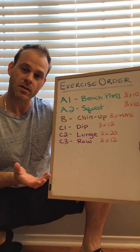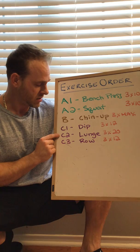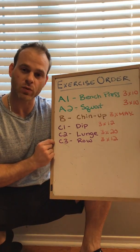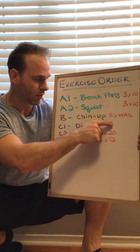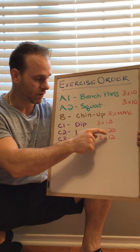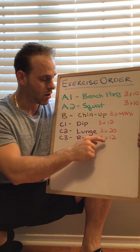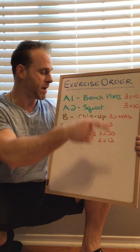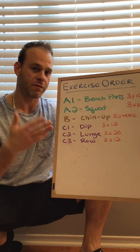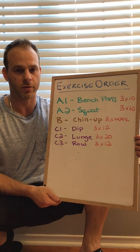The next series in this instance is the C series. The C series has three exercises: C1, which is the dip; C2, which is the lunge; and C3, which is the row. The way this will go is you're going to do your dip for 12 reps, rest, then go into your lunge for 20 reps, then rest, then go into your row for 12 reps, and then repeat back to the top — back to C1. That's one set all the way through, and you're going to repeat for the prescribed number of sets. In this example, it's three sets until you're all done.